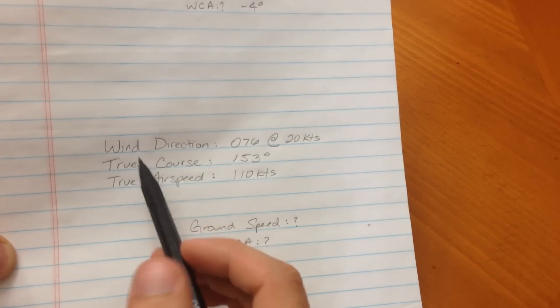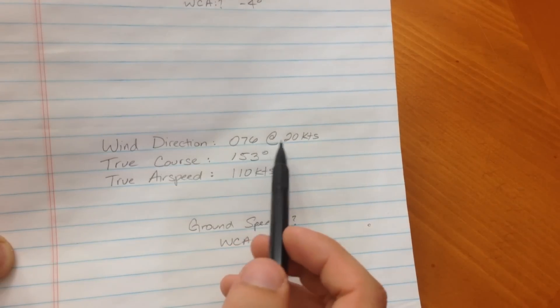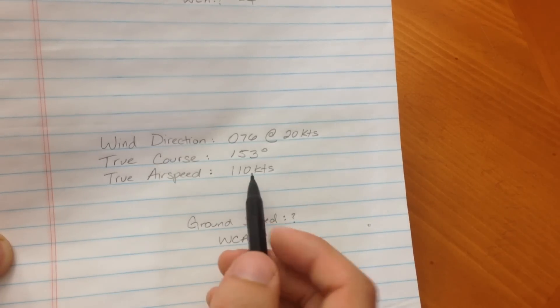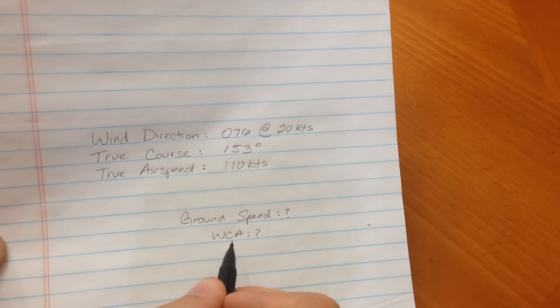Go ahead and now try it yourself. Try for this example, wind direction of 076 degrees at 20 knots, with a true course of 153 degrees, and a true airspeed of 110 knots. Find ground speed and wind correction angle.